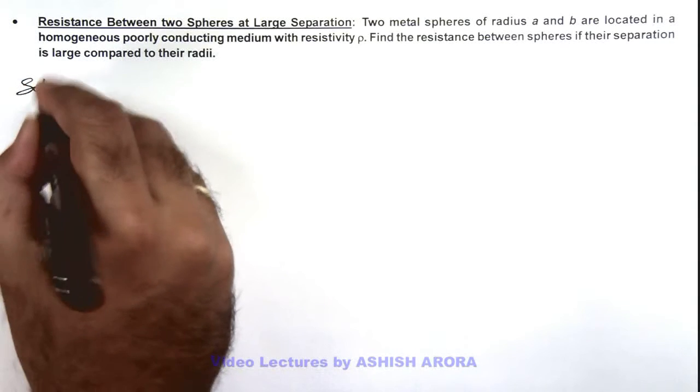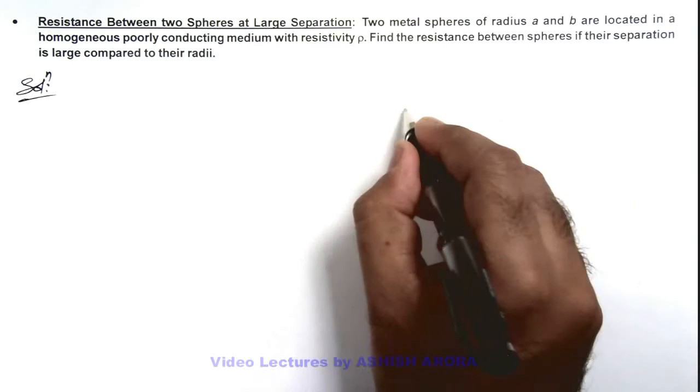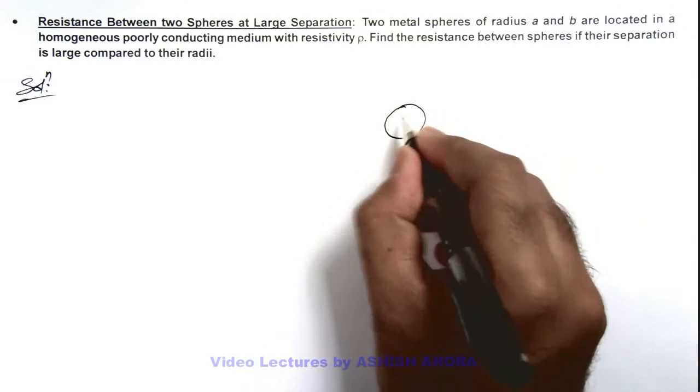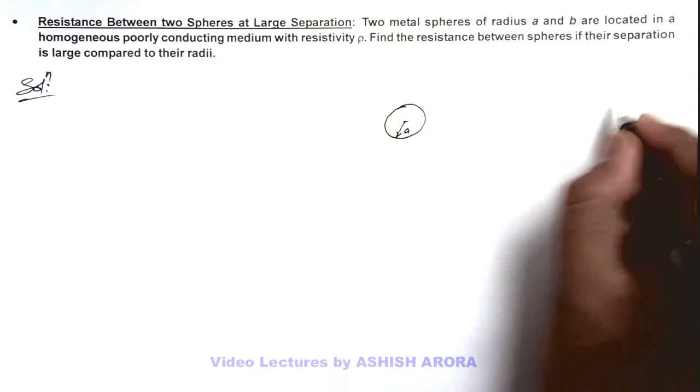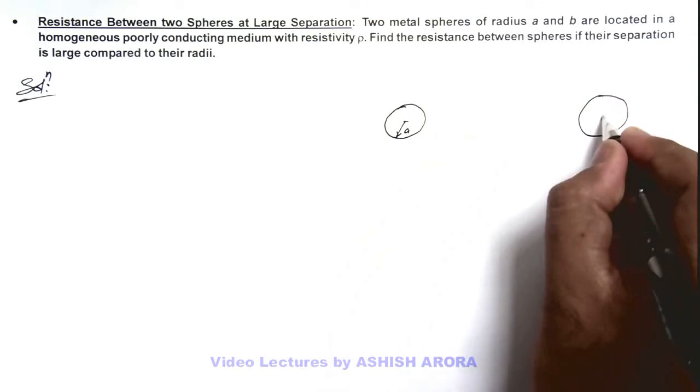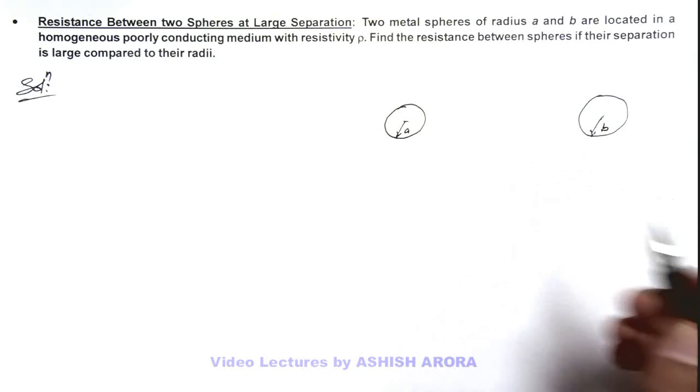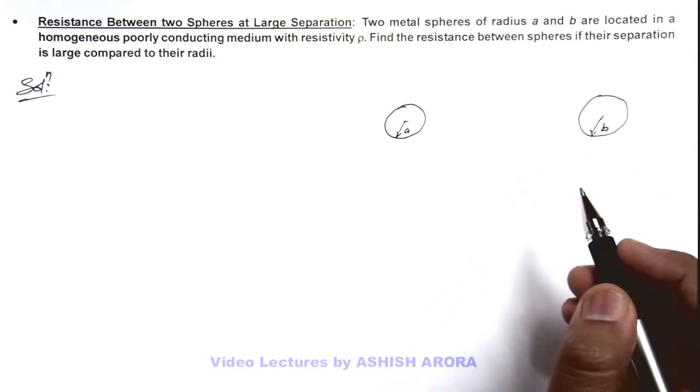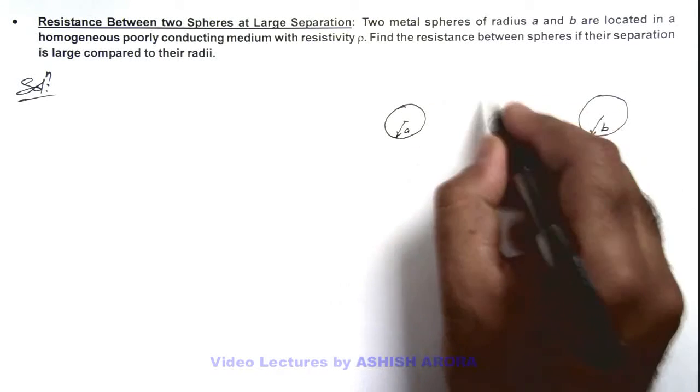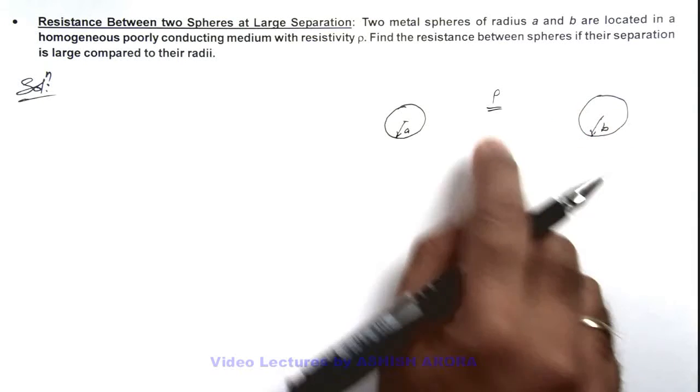Here in this situation we are given that there are two spheres which are having radii a and b. As they are at large separation, we can ignore the inductance effect between the two. The medium between the two is filled which is having a resistivity ρ (rho).